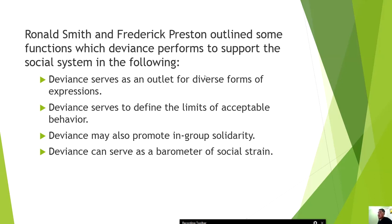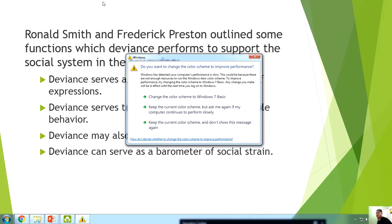Ronald Smith and Frederick Preston outlined functions which deviance performs to support the social system. First, deviance serves as an outlet for diverse forms of expression. Culture is heterogenic and has many sources through socialization. Second, deviance serves to define the limits of acceptable behavior — it provides limits to what is acceptable. Third, deviance may also promote in-group solidarity.